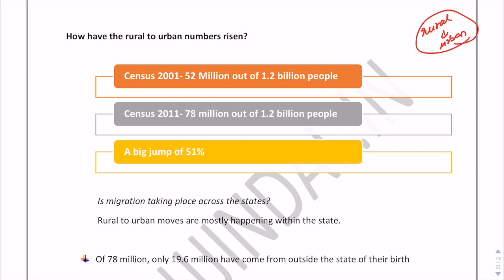Now comparing rural-to-urban migration between 2001 and 2011: in Census 2001, migrants who moved from rural to urban areas stood at 52 million. By 2011, this figure jumped by 51% to 78 million. So 78 million out of 1.2 billion people are now moving from rural areas to urban areas in search of jobs or for other purposes.